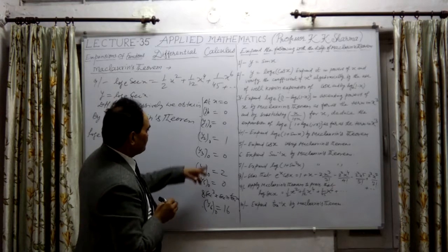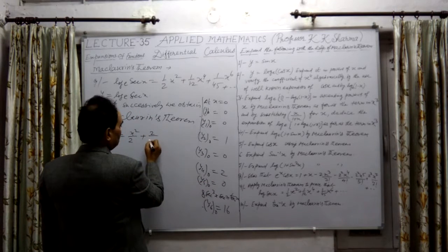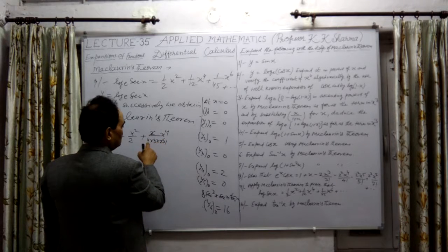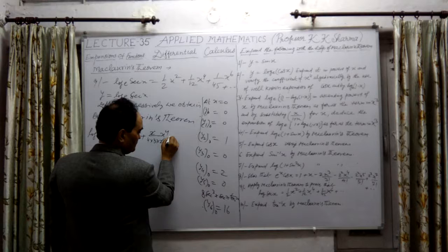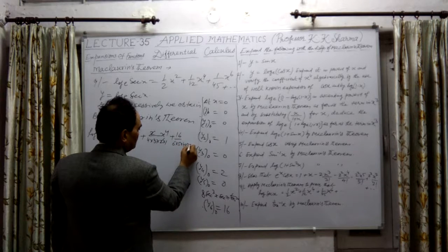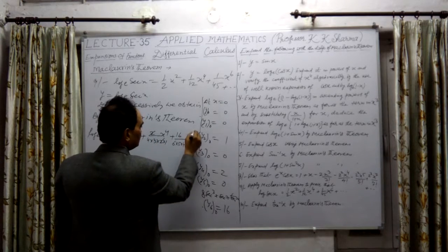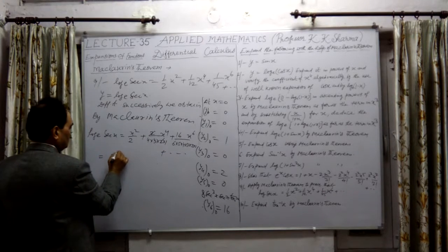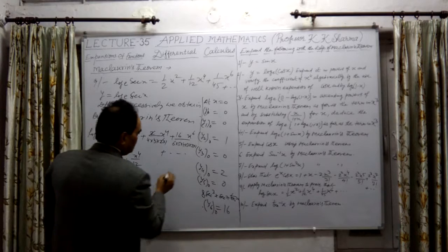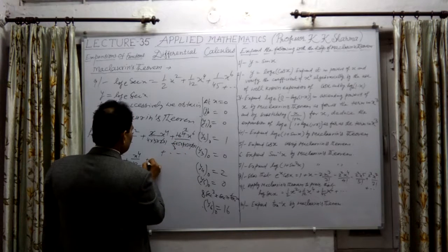Plus then it's: by 2 is - we have obtained this - by 4 is 2, so 2 upon factorial 4, that means 4 into 3 into 2, into x4. Factorial - 2 cancels out - only 12 remains. Then by 5 is 0, by 6 is 16, that means 16 upon factorial 6 - 6 into 5 into 4 into 3 into 2 into 1 - into x6. So further we write it as: x squared upon 2, plus x4 upon 12, plus x6 upon 45.